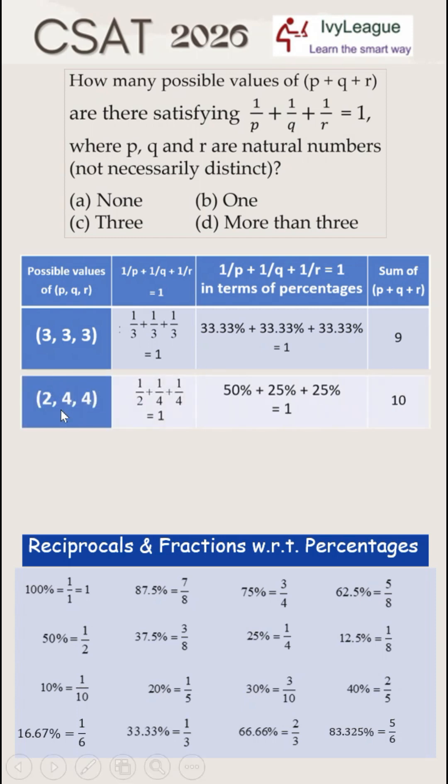Similarly, 1 upon 2 plus 1 upon 4 plus 1 upon 4 is also equal to 1. Hence sum of P plus Q plus R will be 11.